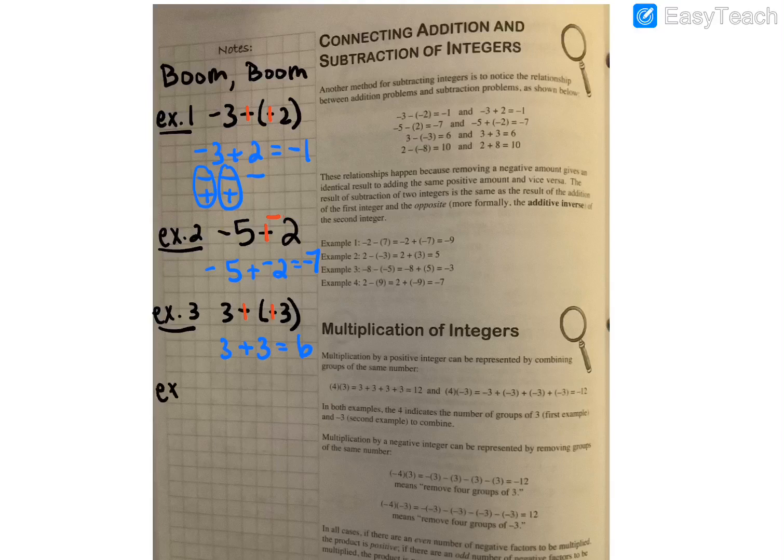All right, last one. Two minus negative eight. Okay, so same thing we've been doing. Boom, boom. So now the problem is two plus eight, which equals ten.